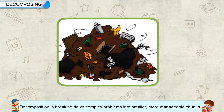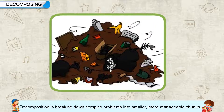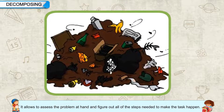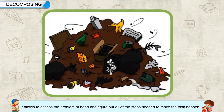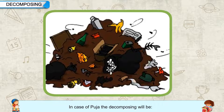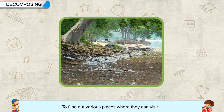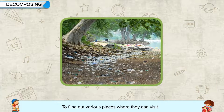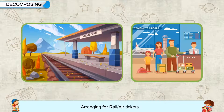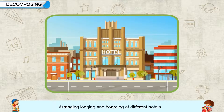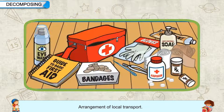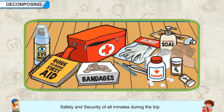Decomposing: Decomposition is breaking down complex problems into smaller, more manageable chunks. It allows you to assess the problem at hand and figure out all of the steps needed to make the task happen. In Pooja's case, the decomposing will be: finding out various places to visit, collecting information about each place, arranging rail or air tickets, arranging lodging and boarding at different hotels, arrangement of local transport, and safety and security of all members during the trip.